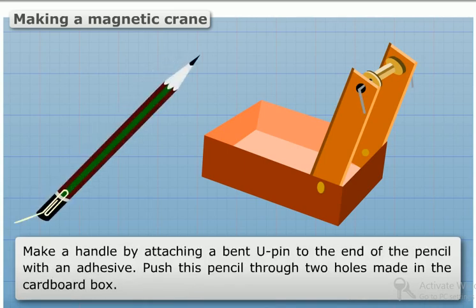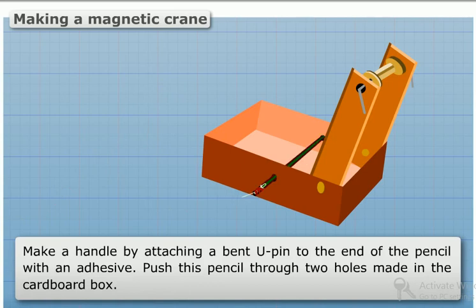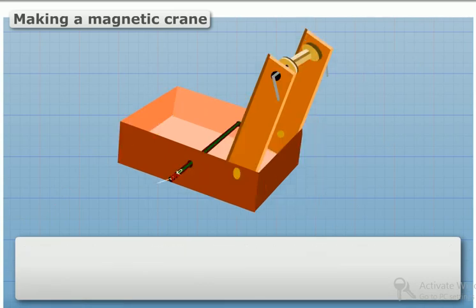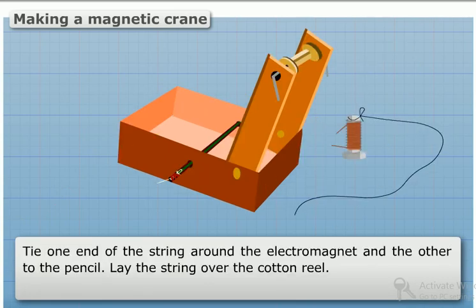Make a handle by attaching a bent U-pin to the end of the pencil with an adhesive. Push this pencil through two holes made in the cardboard box. Tie one end of the string around the electromagnet and the other to the pencil.